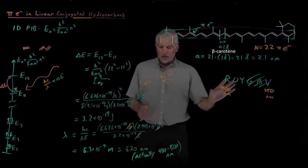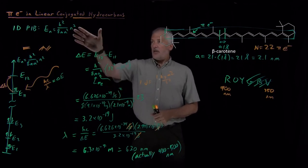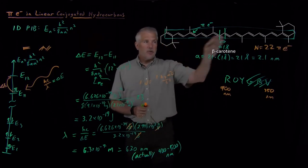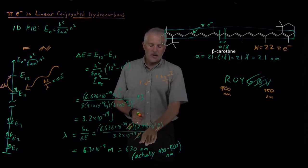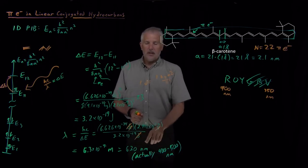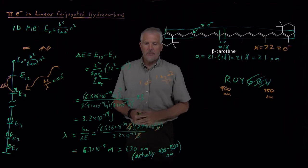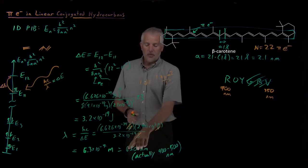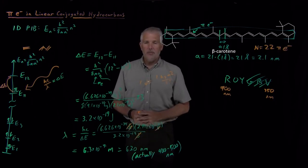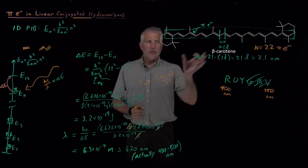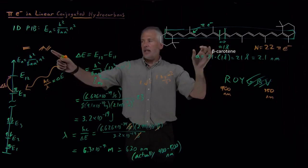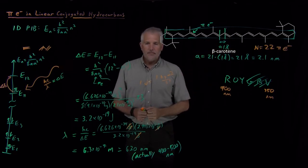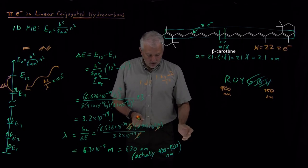So summing up what we've done, we can use the particle-in-a-box model for real conjugated molecules to make predictions about what colors of light they'll absorb. The answers aren't perfect. So as long as we understand that they're going to have some error, we can at least make a rough prediction of what colors of light are going to be absorbed. It's more useful perhaps in the qualitative style of prediction, saying that beta carotene is going to absorb at a much longer wavelength than hexatriene or octatetrine.